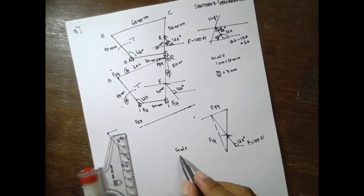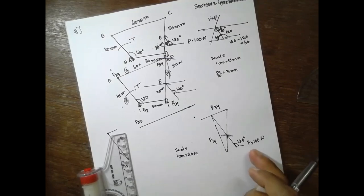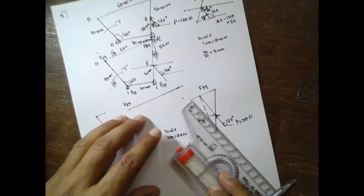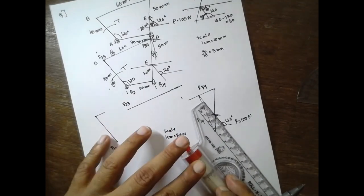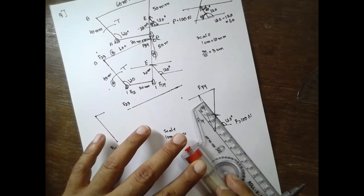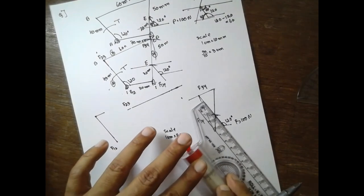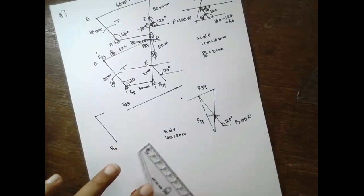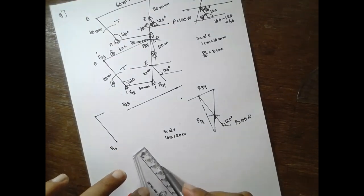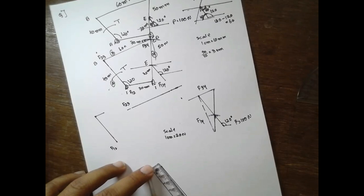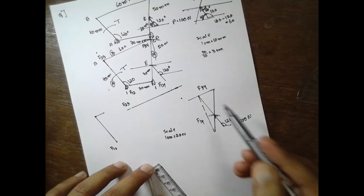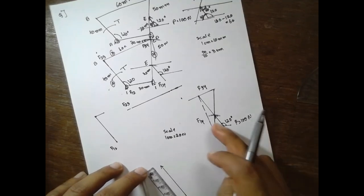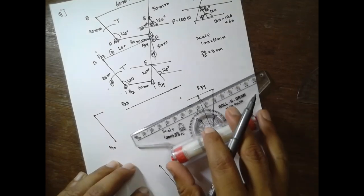I will consider the scale here. Scale: 1 cm is equal to 20 N. 20 N — I will draw exactly parallel, 5 cm here. We know the arrows here — in this direction, the arrow is in our direction.